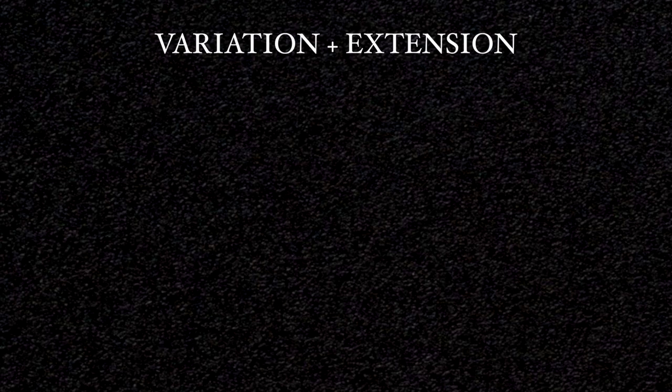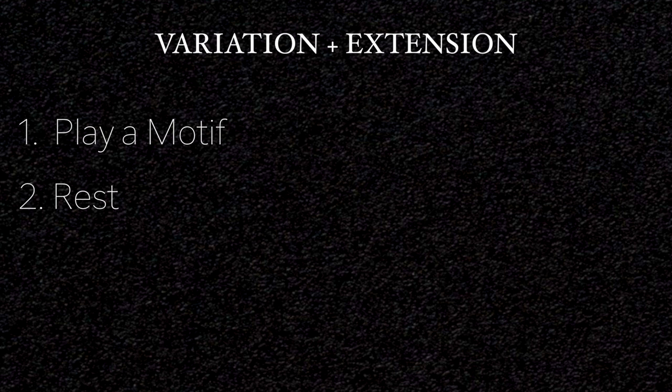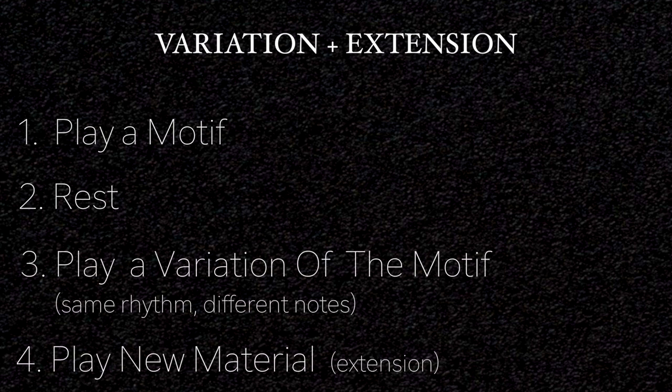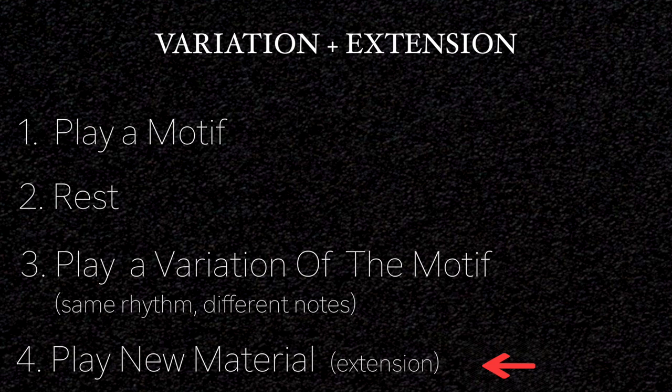Here is Variation Extension. You play a motif — something developable with recognizable characteristics. You rest for a bar or two and then you play a variation on that motif immediately followed by new material. You play a variation on that motif by keeping the same rhythm and changing the notes, and then you immediately add a new bit of musical information, which is the extension part.